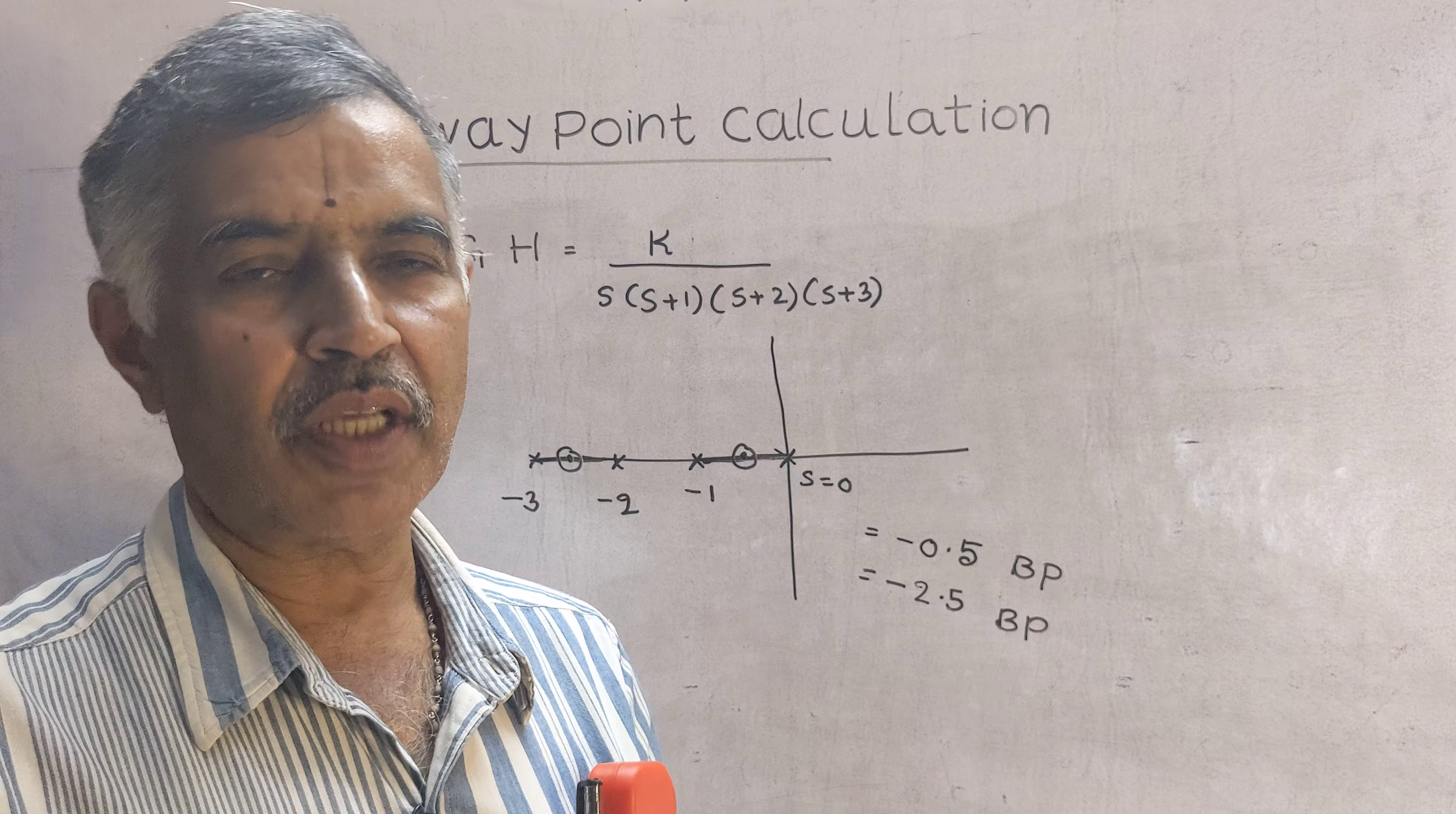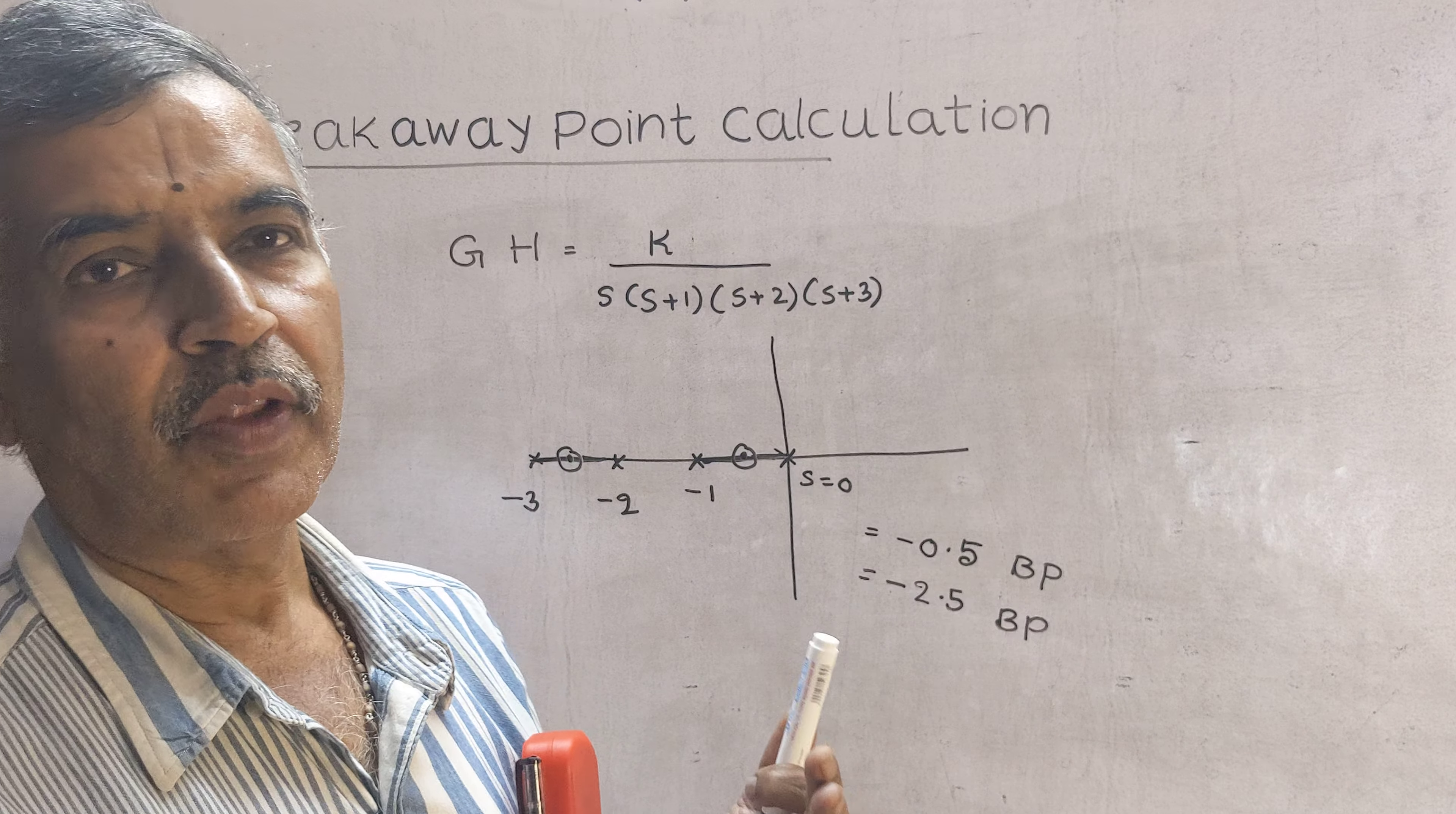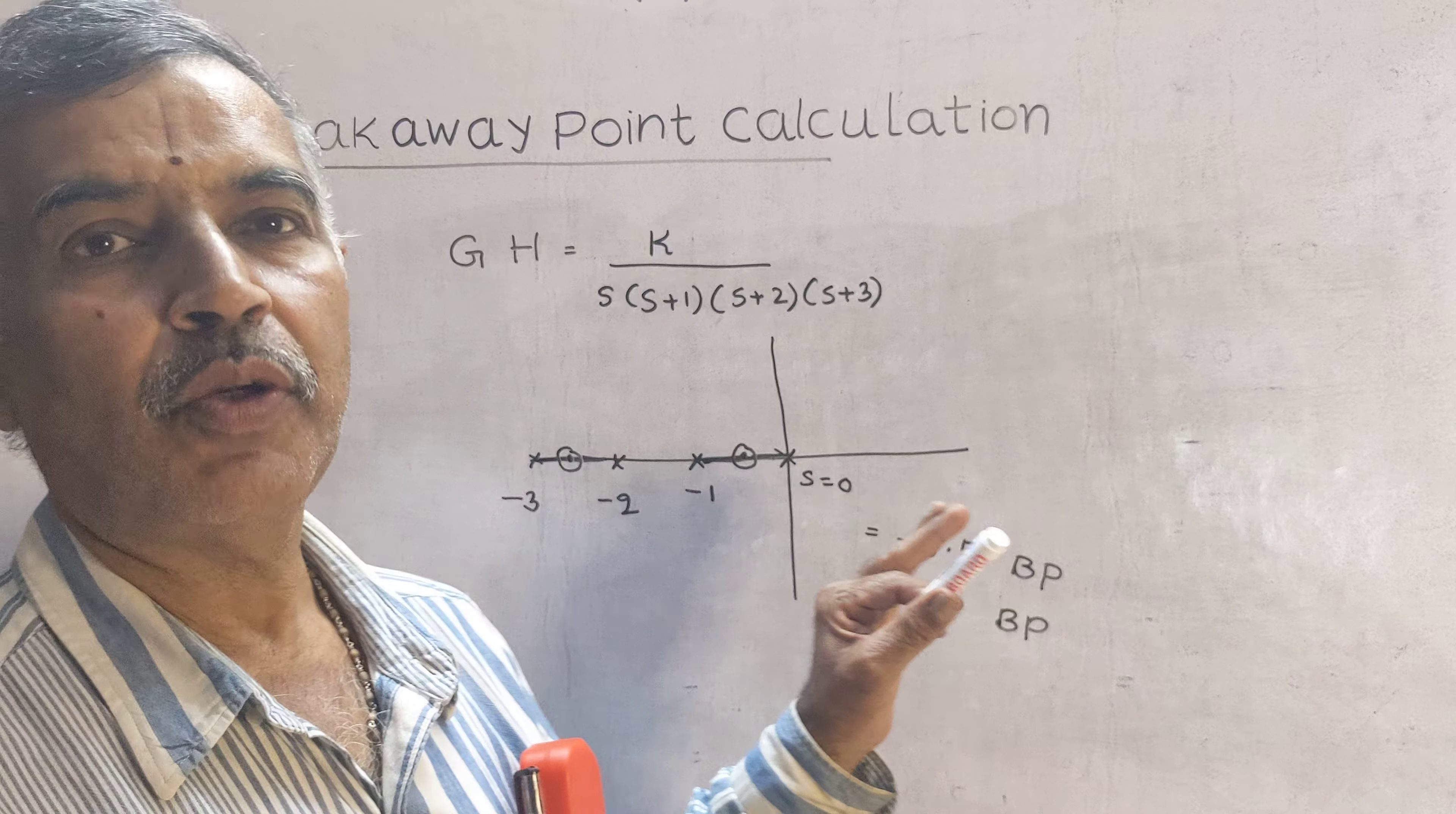Now in the examination students are not supposed to follow the procedure dk by ds equated to 0. It consumes lot of time. Therefore follow this guideline: roughly if two poles are side by side the middle point will be almost the breakaway point.